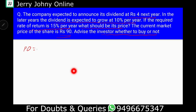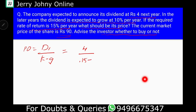Let's get into this. We have the formula: P0 equals D1 divided by K minus G. Substituting: D1 is 4 rupees, K is 15% which is 0.15, minus G which is 10% or 0.1. That gives us 4 divided by 0.05, which equals 80 rupees. So P0, the intrinsic price, is 80 rupees.